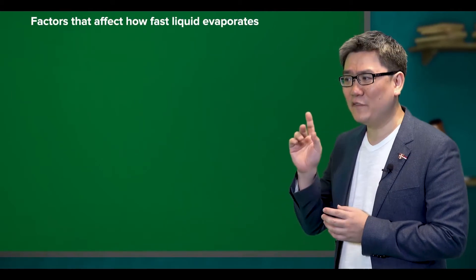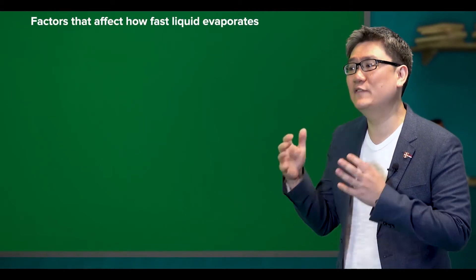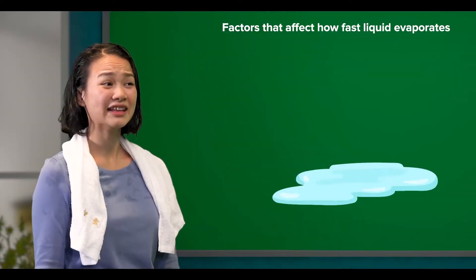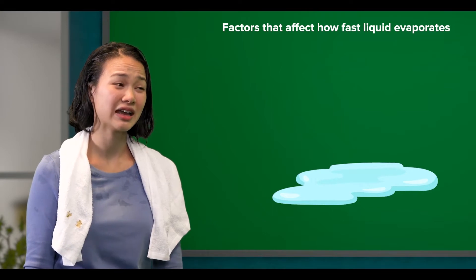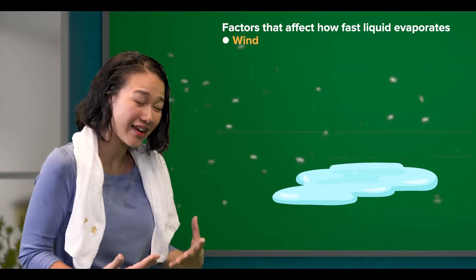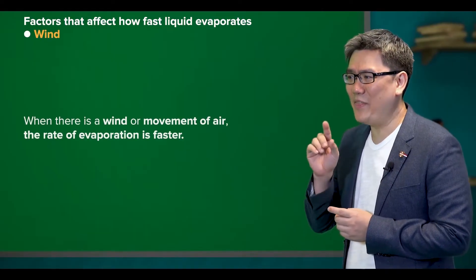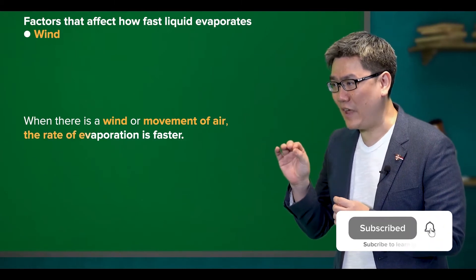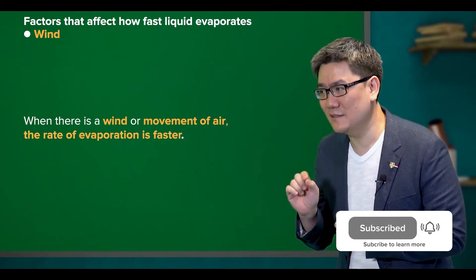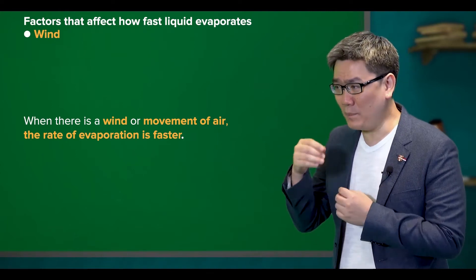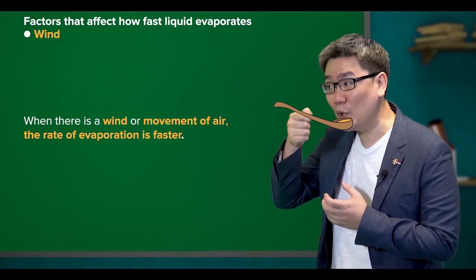Which reminds me, there are quite a few factors that affect how fast water evaporates. Do you want to try to name a few? I can say the one that was affecting me just now — the wind, because it is really cold under the air-conditioner. That is right. When there is wind or movement of air, the rate of evaporation is faster, which is why when you want to cool your soup before you drink it, you blow on it.